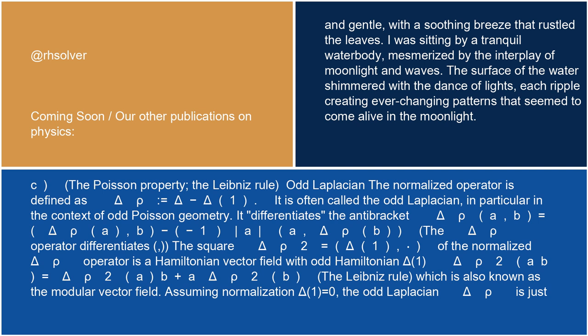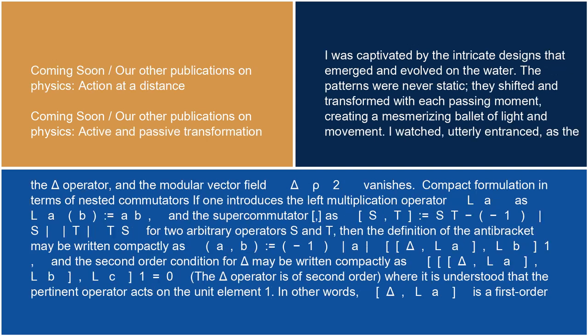Assuming normalization delta(1) equals 0, the odd Laplacian delta_rho is just the delta operator and the modular vector field delta_rho squared vanishes.